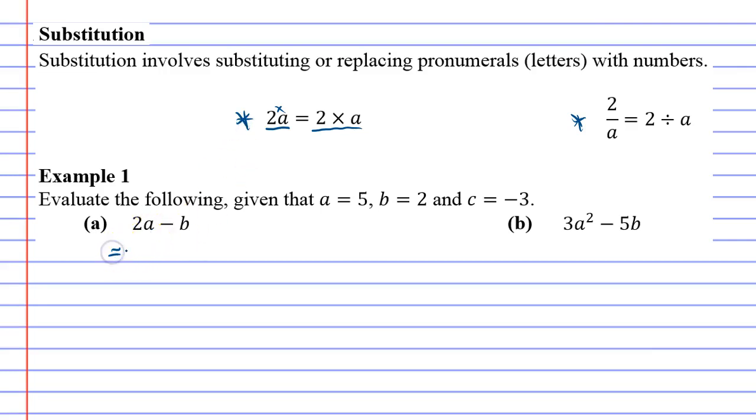For instance, if I look at question a in example one, this is really 2 times a minus b. Now to evaluate the following question, we need to know what a, b, and c represent. And a represents 5, so we're going to substitute a with 5, and we're going to substitute 2 for b, since b equals 2.